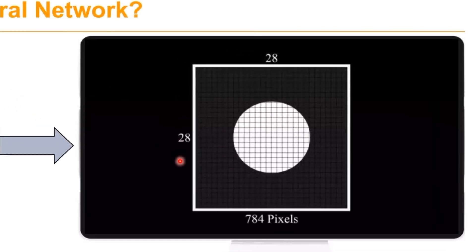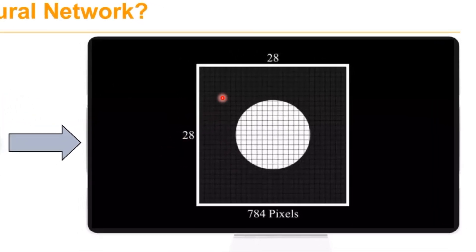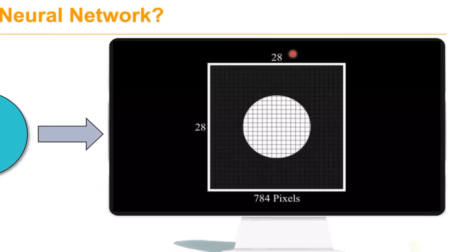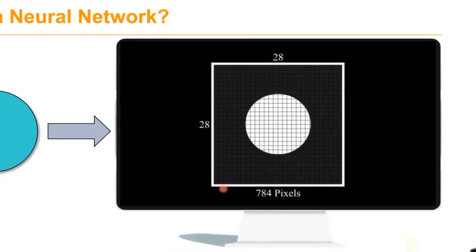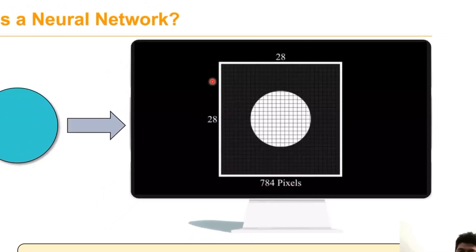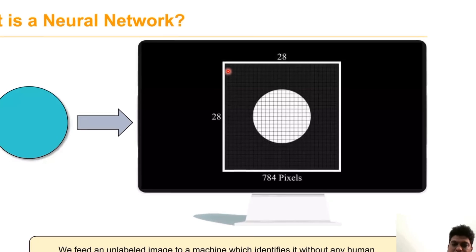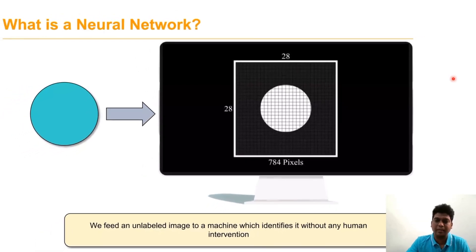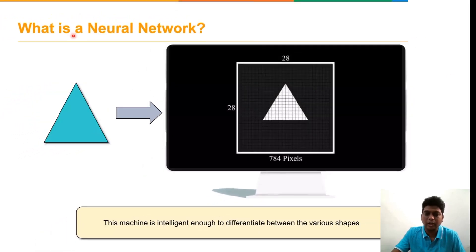Here we have a 28x28 image, which gives us 784 pixels. There are 784 pixel elements in this two-dimensional image. Neural networks help to identify and differentiate various types of shapes.